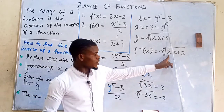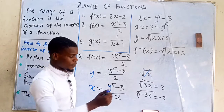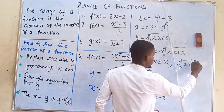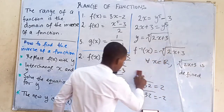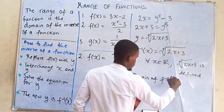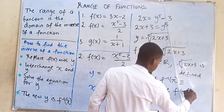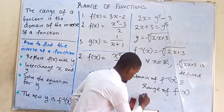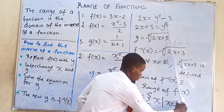This tells us that the input to ⁵√(2x + 3) can be any real number — bigger than zero, less than zero, or equal to zero. So for all x in ℝ, the function ⁵√(2x + 3) is defined. That means the domain of f⁻¹(x) — which is the range of f(x) — is the set of all real numbers, with no exception.